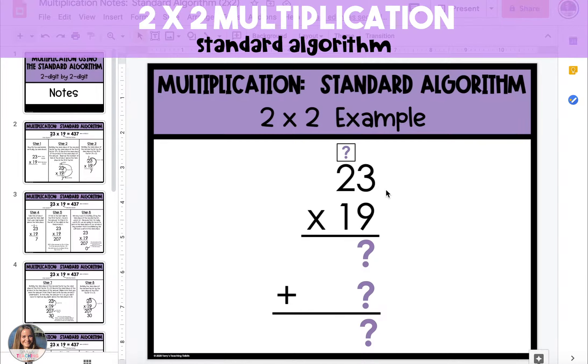We're going to start by multiplying the 9 in 19 in the ones place by each of the digits in our first factor of 23. So 9 times 3 is 27. We place the 7 in our ones digit of the answer area, and we're going to carry the two tens above the tens place in our first factor.